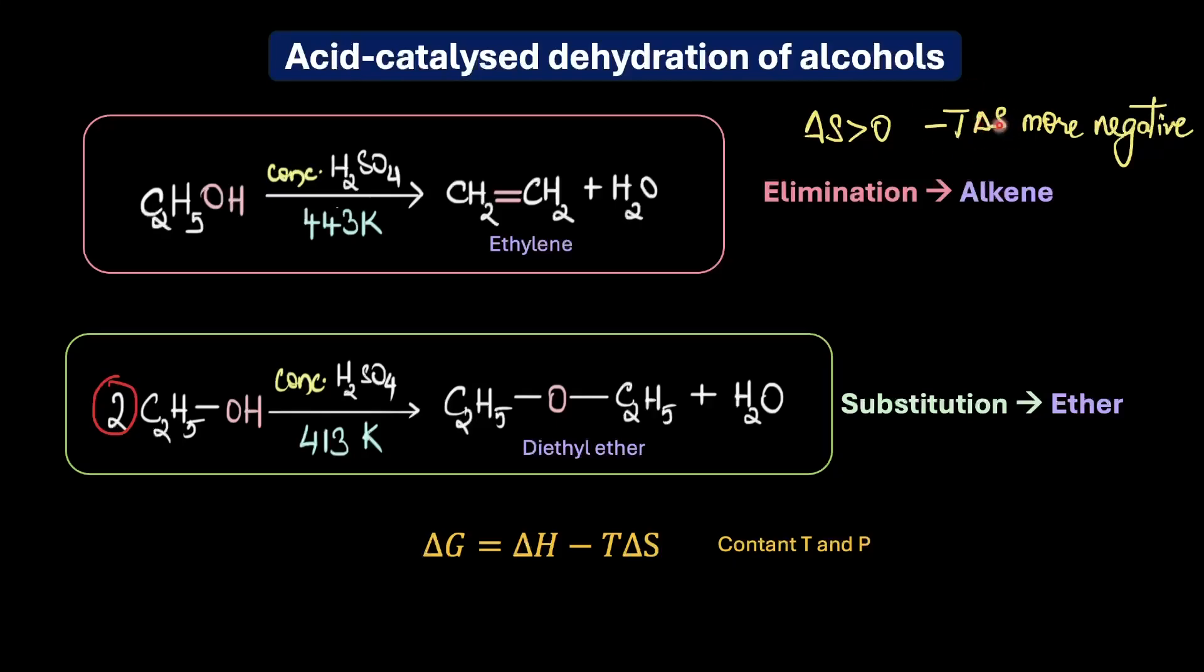That means as temperature increases, the minus T delta S term becomes more negative and that makes delta G more negative. In other words, it makes the elimination reaction more favorable at a higher temperature because this term becomes more negative and this helps make delta G more negative.